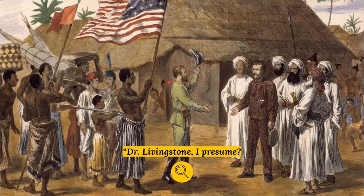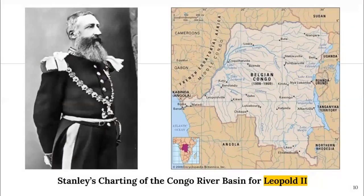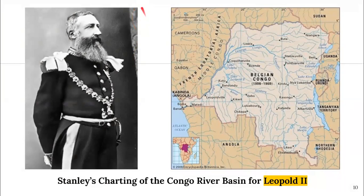Stanley, now the man of the hour — a nobody who found Livingstone — suddenly becomes a sensation. Because of this, a rather ambitious European monarch named Leopold II reaches out to Stanley, because Leopold has special ambitions of his own. It should be said upfront that Leopold is not a good guy in history. He is going to unleash one of the darkest and most horrific chapters in world history by what he plans to do in the Congo.